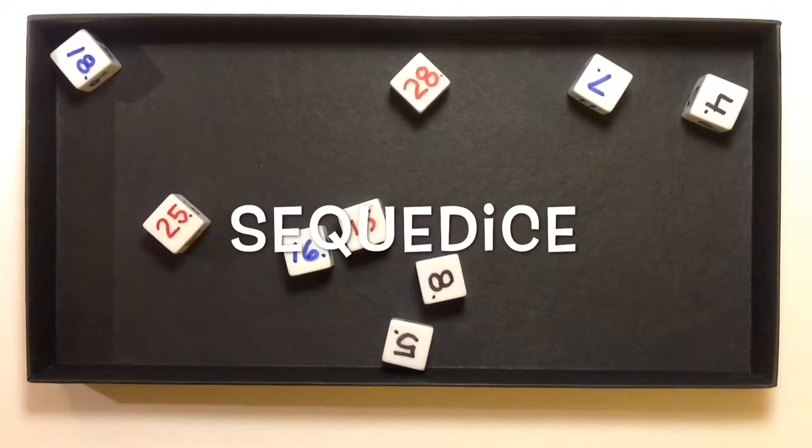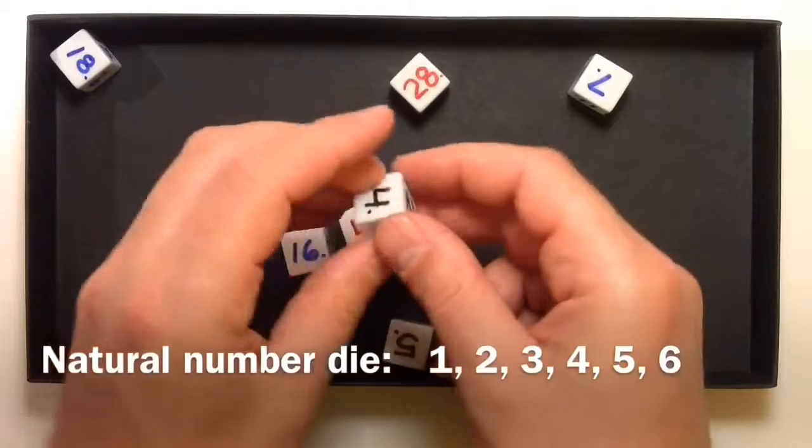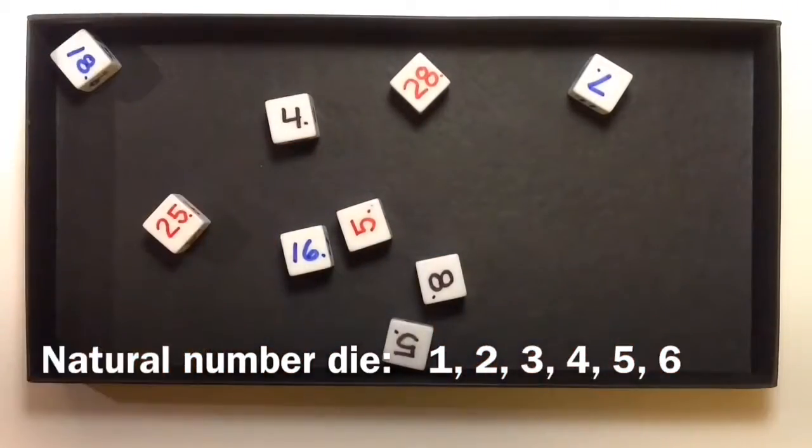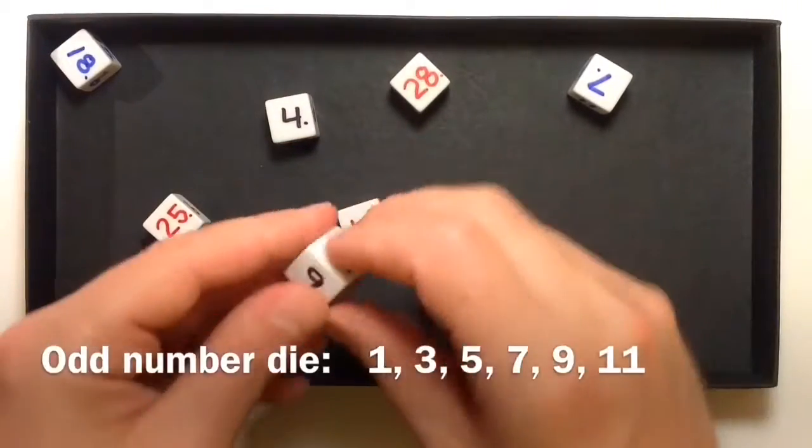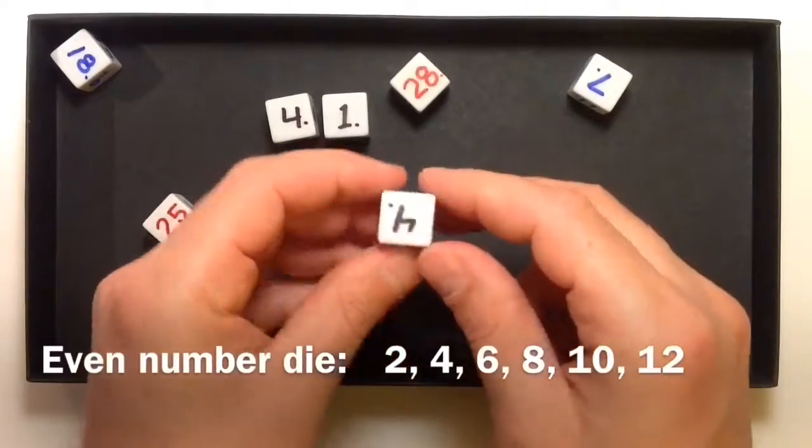Sequidice are dice labeled with noteworthy number sequences. There's a natural number die, an odd number die, an even number die.